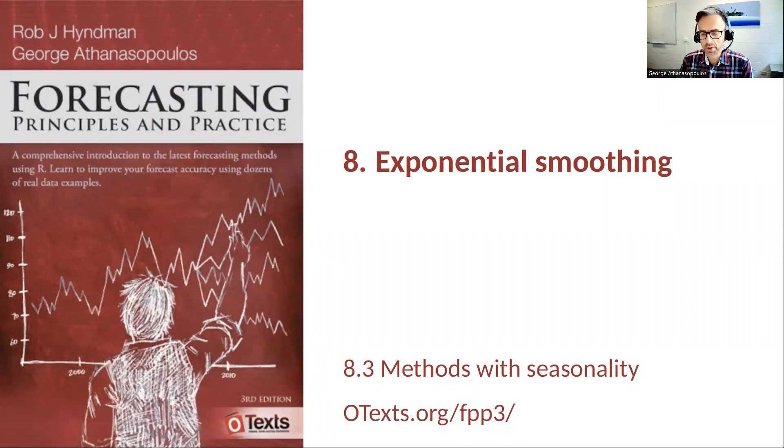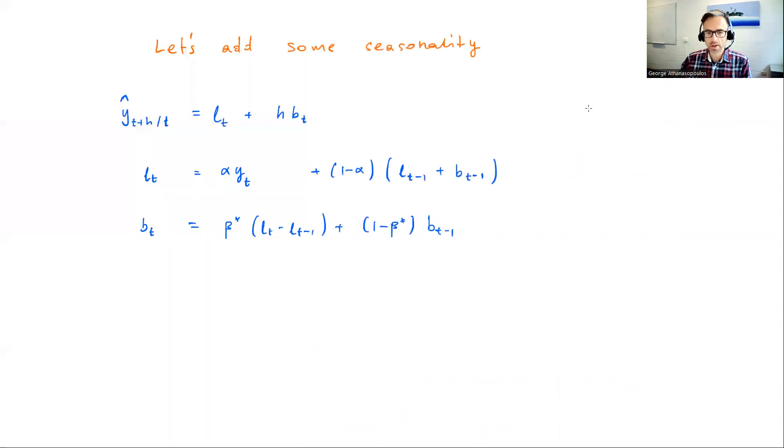Building on Holt's linear trend method, Charles Holt and his student Peter Winters extended Holt's linear trend method to also account for seasonality. So let's have a look at this method in this section. Here are the equations for Holt's linear trend method. If we've got seasonality, we want to include components, we need to include parts that will account for seasonality.